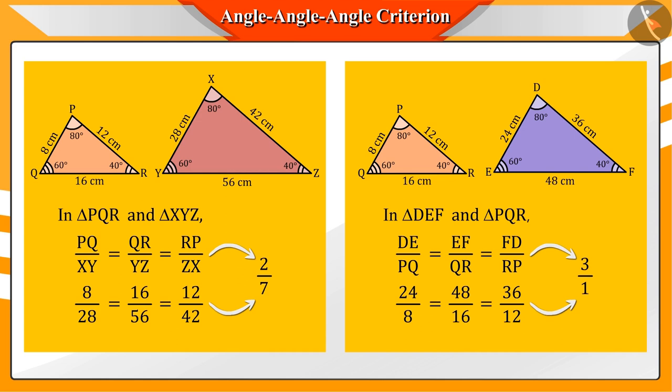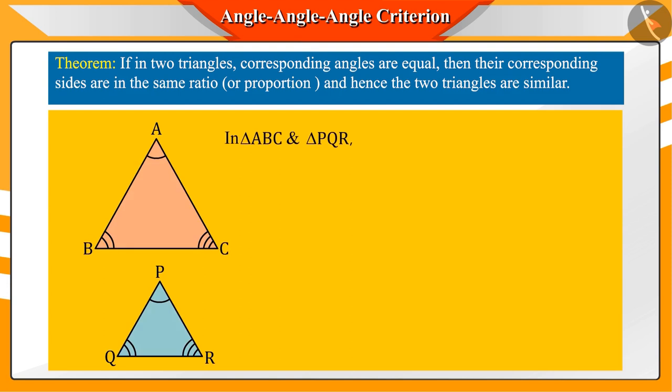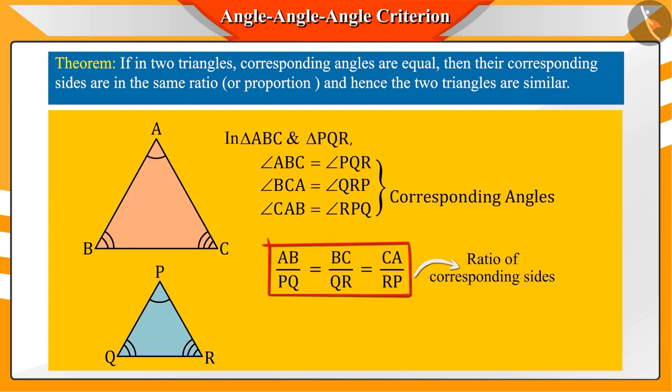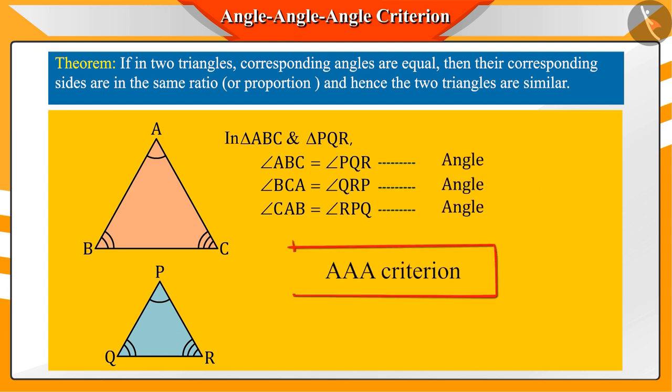This activity leads us to the conclusion that if in any two triangles, the corresponding angles are equal, then their corresponding sides are in the same proportion or ratio and hence the two triangles are similar. This criteria of similarity of triangles is called the AAA criteria.